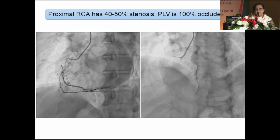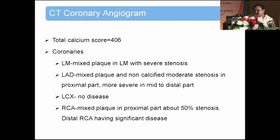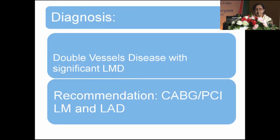The right coronary artery is showing a mid-segment 50% lesion and the PLV is 100% blocked. The patient also had a CT angiogram done outside the country. The CT angiogram report showed: left circumflex mixed plaque with severe stenosis; LAD mixed plaque with non-calcified moderate stenosis in the proximal part and more severe stenosis in the mid-to-distal parts; circumflex having no disease; right coronary having mild disease 50% in mid-segment, and distal RCA having diffuse disease. Analyzing both conventional and CT angiogram, I concluded the patient had double-vessel disease with significant left circumflex and LAD disease, and recommended CABG or PCI to left circumflex and LAD.